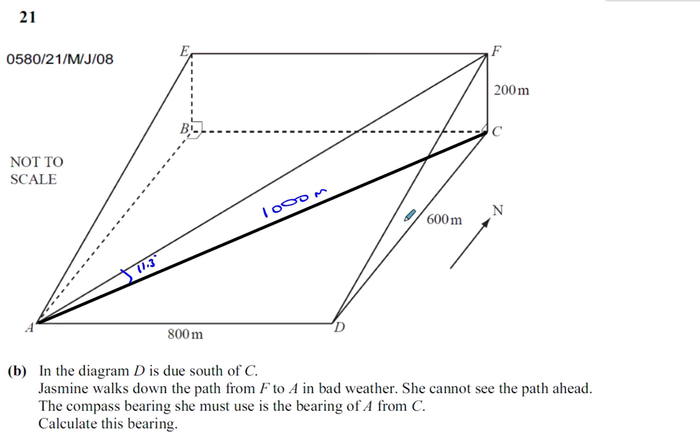Now for part B of the same question. In the diagram, D is due south of C. You can see they've drawn a north line parallel to DC, so D is due south of C.